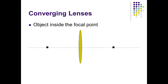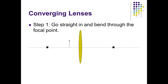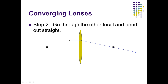If the object is inside the focal point, we can do the exact same steps, but we'll see different versions of the image. I'm going to start with my object right there. I'm going to go straight to the lens and then bend to the focal point on the opposite side. However, since we are inside the focal point, we can't go through it to hit the lens, but we still need to use it as a guide. I would line up my focal point and the top of my object with a ruler, follow that line, and then once it hits the lens, it's going to go straight out. Step one: go from the top of my object straight to the lens, and then bend through the focal point. Step two: bend from the focal point and then go straight once it hits the lens.